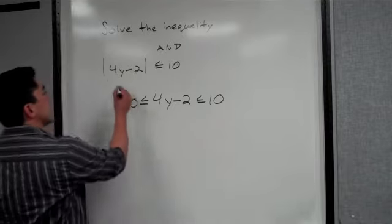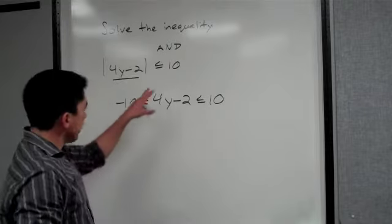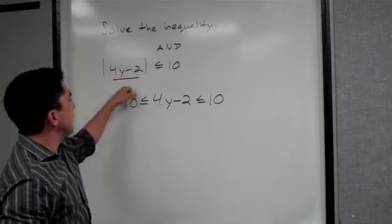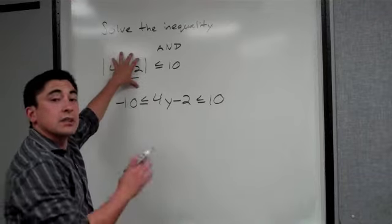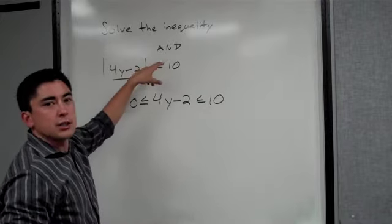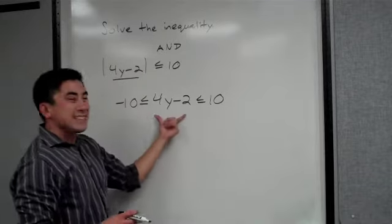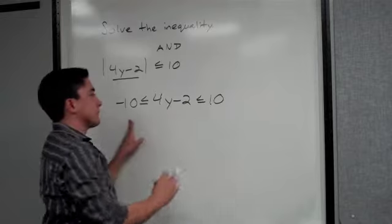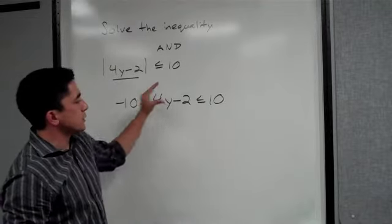Because if you think about it, this on the inside has to be less than 10 or equal to it. So therefore, this has to be less than 10, but it can't go further than negative 10. If this right here were equal to negative 11, once you take the absolute value, it becomes not true because 11 is not less than or equal to 10. So basically, this on the inside has to be in between 10 and negative 10. So we set it up this way. Notice they're both going the same direction.